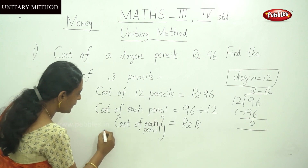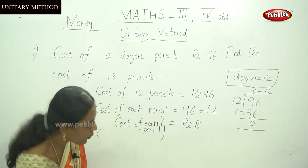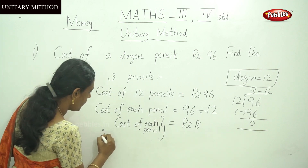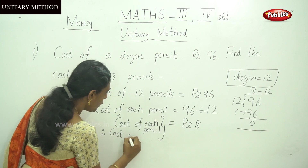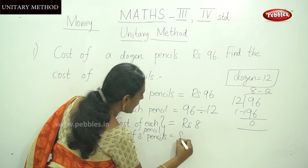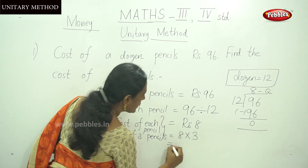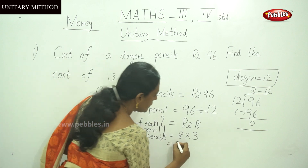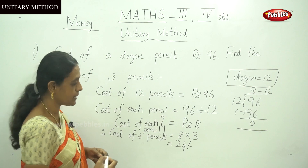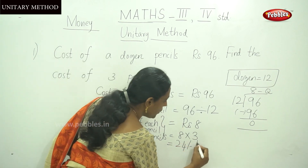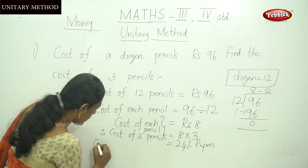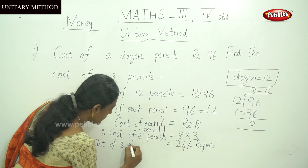Therefore, cost of 3 pencils equals 8 multiplied by 3. 8 threes are 24. So the cost of 3 pencils is 24 rupees. This is the final answer — cost of 3 pencils equals rupees 24.